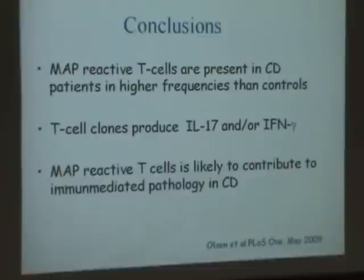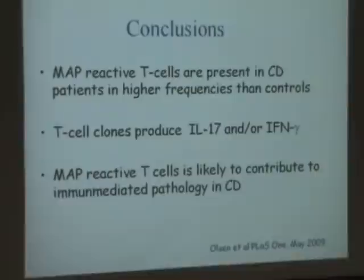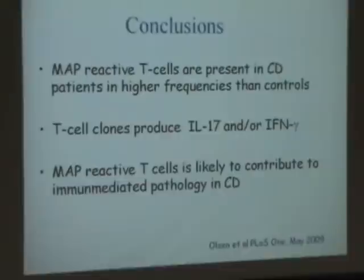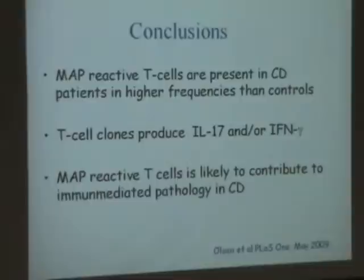To conclude: we do have MAP-reactive T cells present in Crohn's disease patients at higher frequencies than in controls, and they produce inflammatory cytokines IL-17 and interferon gamma. I think it is fair to conclude that these MAP-reactive T cells are likely to contribute to the immune-mediated pathology in CD. You can't really say if they initiate the process — for that you would really need data from early-stage pediatric patients, though I don't know if you can get biopsies from them.